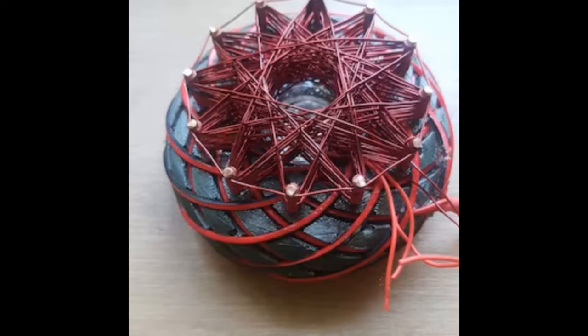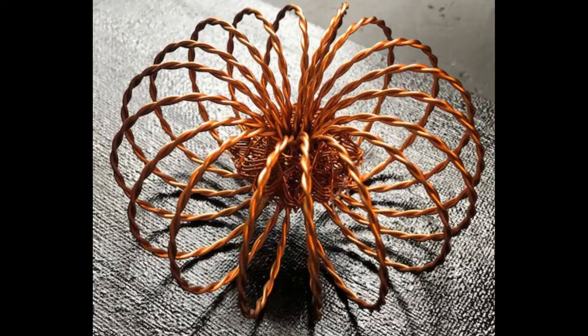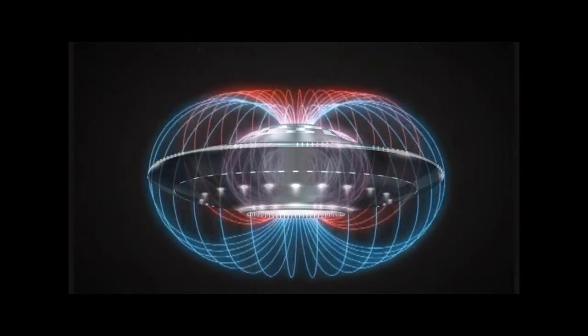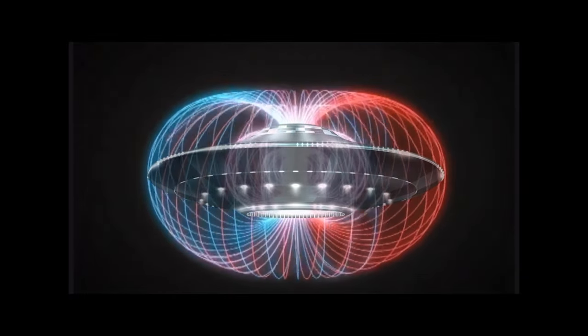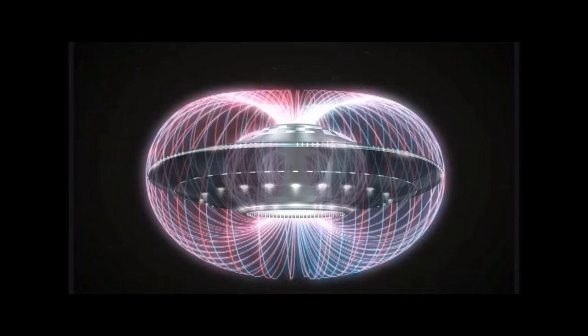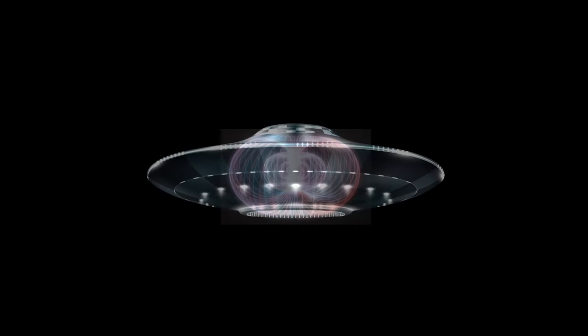But once we have our field coil and we start to understand what it does, what else do we need to put into this device to get us our field flow? Because just this coil as it sits is not going to do it without adding certain effects to it. As we look back at our UFO structure and how the fields are built, we also have to realize we need different types of energy. We're going to need a magnetic field and we're also going to need a static field.